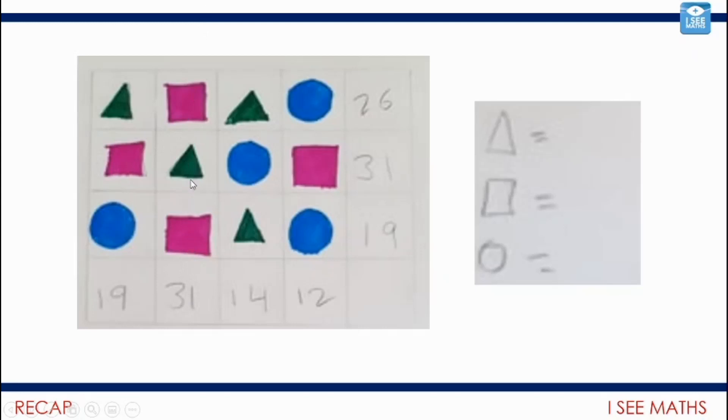A square, a triangle and a square is 31. A square, a triangle, a square and a circle is 31. So having that extra circle doesn't change the total at all. So the circle must be worth a zero. And then I thought, where am I going to go to next? I thought I'll go to this one. So I've got two circles and a square. So without any calculation, I know that square is 12.